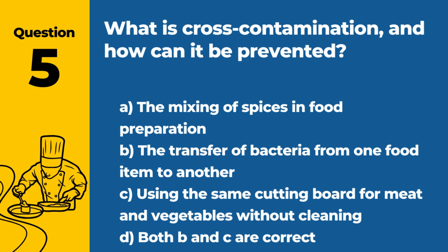Question 5. What is cross-contamination and how can it be prevented? The answer is D: Both B and C are correct — the transfer of bacteria from one food item to another, and using the same cutting board for meat and vegetables without cleaning. Cross-contamination can be prevented by using separate equipment for raw and ready-to-eat foods and by thorough cleaning.